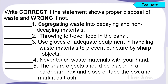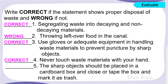And now, let's check your answers. For number one, segregating waste into decaying and non-decaying materials — it is correct. For number two, throwing leftover food in canal — it is wrong. Number three, use gloves or adequate equipment in handling waste materials to prevent puncture by sharp objects — it is correct. Number four, never touch waste materials with your hand — it is correct. And lastly, the sharp objects should be placed in a cardboard box and close or tape the box and mark it as trash — it is correct.